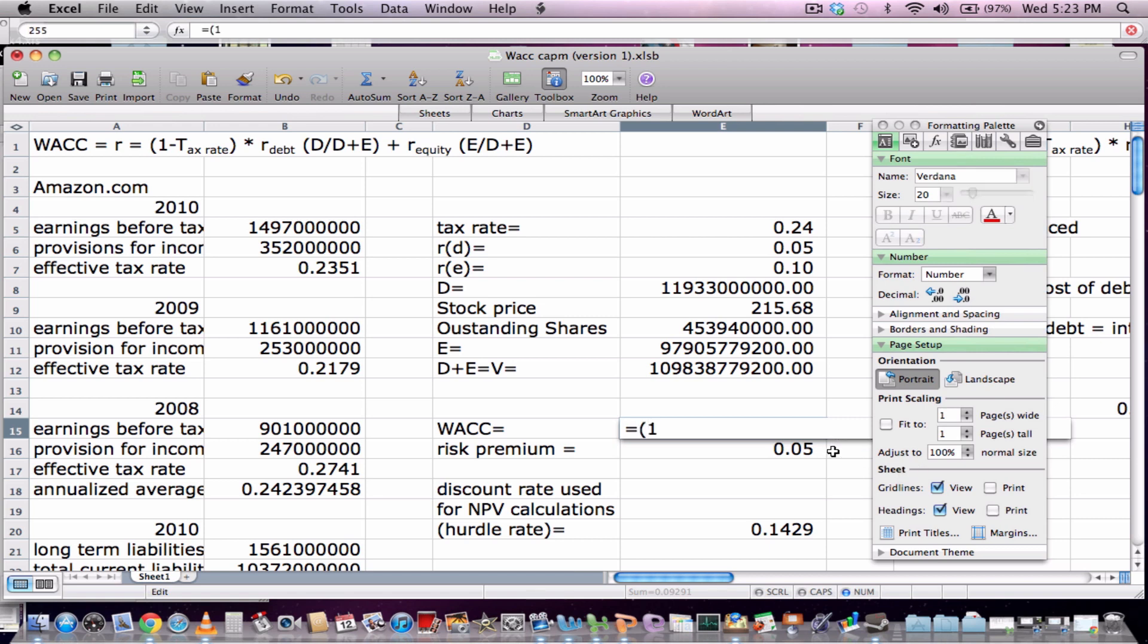So it is one minus the tax rate times the cost of debt times the proportion of debt to total value of firm, debt plus equity, over value of the firm.